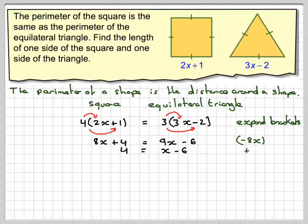The opposite of taking 6 is to add 6 to both sides. 4 plus 6 gives me 10. Then x minus 6 plus 6 just gives me x. So we get the value of x.